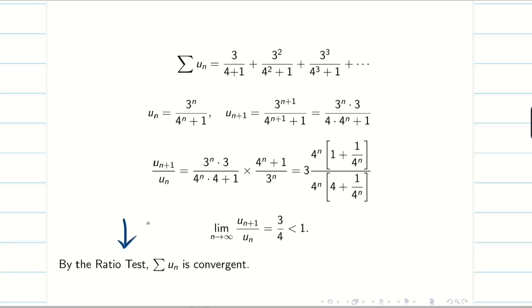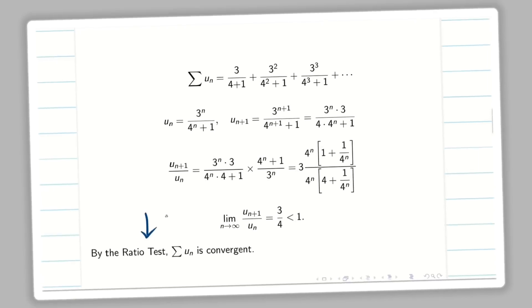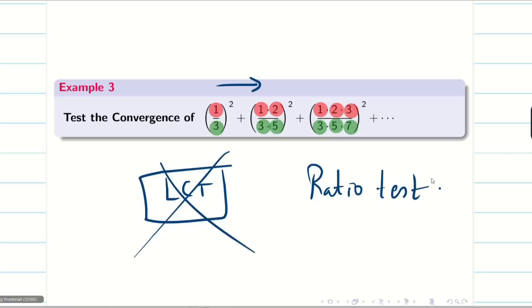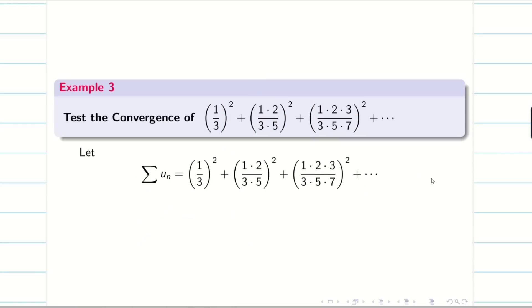Let us go into the next problem. Test the convergence of this series. See here, in the first term, I have 1 data in numerator. In second term, I have 2 datas. In third term, I have 3 datas. Similarly, for the denominator also, first term 1 data, second term 2 data, third term 3 data. So the datas in the terms are increasing. So LCT cannot be applied. I have to go for ratio test. As usual, write summation un.